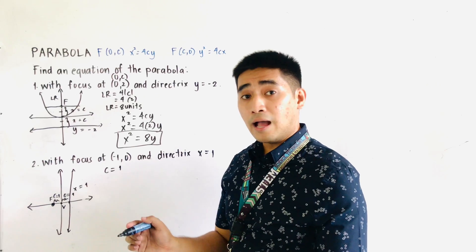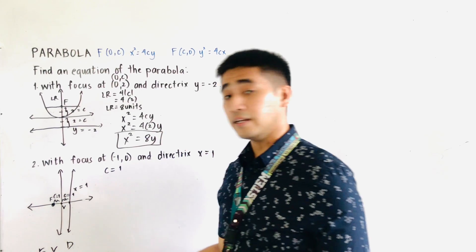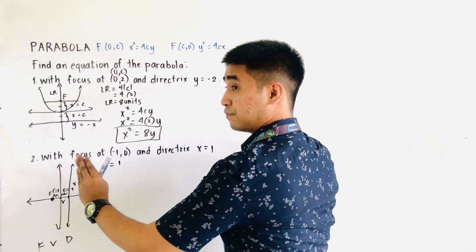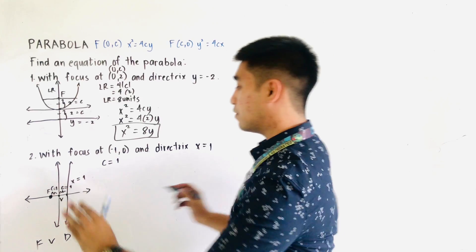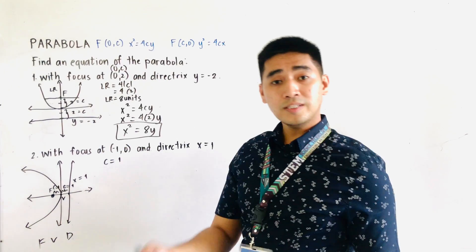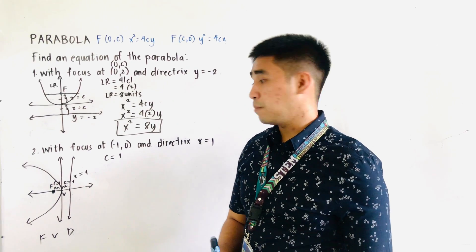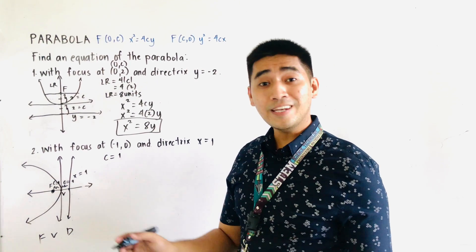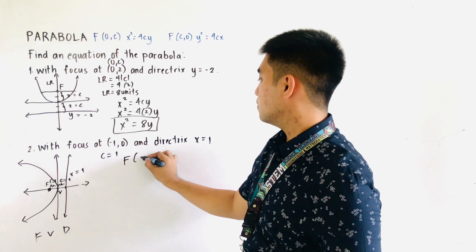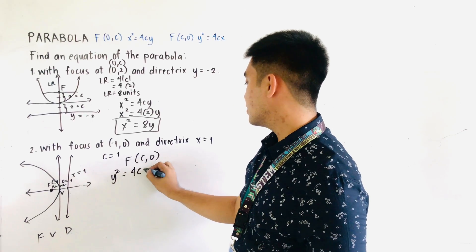Since we have the focus, the vertex, and the directrix, and the focus is located to the left of the vertex, our parabola is opening to the left. Always remember that wherever the focus is located, that is the opening of the parabola. Since the focus is at (c, 0), our equation would be y² = 4cx.